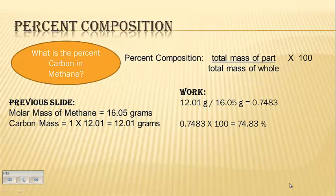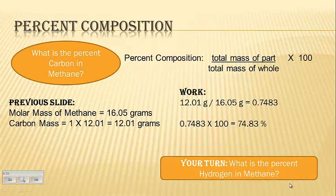This brings us to percent composition. This is a way that we can practice using molar mass. So, what is the percent carbon in methane? Well, percent composition, like in any percent, you take the part over the whole times 100. We already calculated the molar mass in the previous slide, and we determined that it was 16.05 grams for every one mole of methane. You also calculated the total mass of the carbon in methane, and that was 12.01 grams. So, you're going to take the part, which is 12.01, over the whole, 16.05, and get your answer, and then multiply it by 100, which is 74.83%. Now, it's your turn. Write this down. What is the percent hydrogen in methane? Show your work. Bring your answer tomorrow.